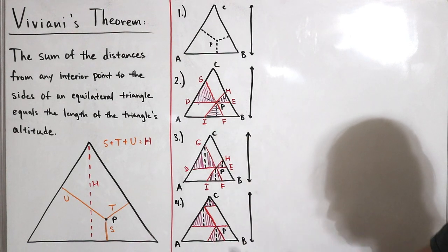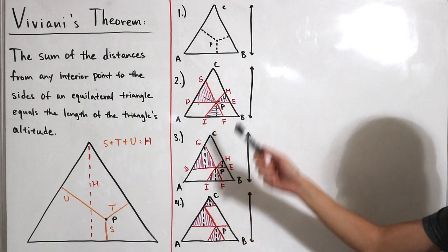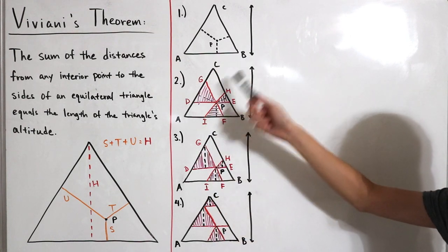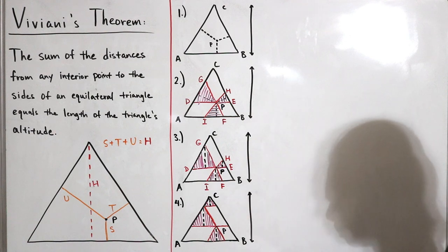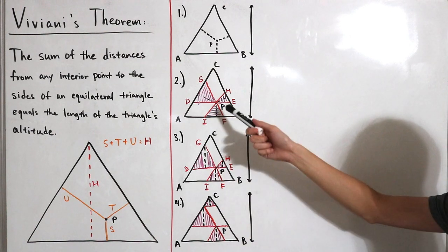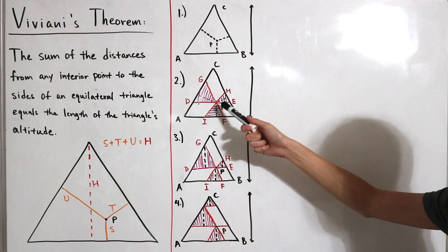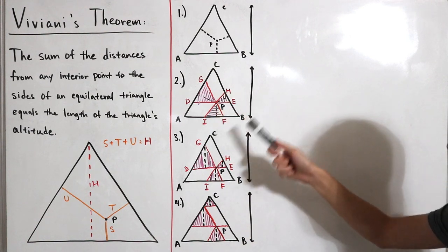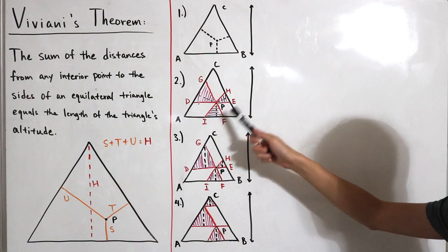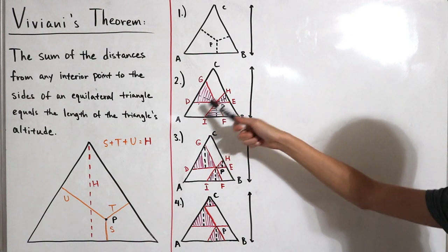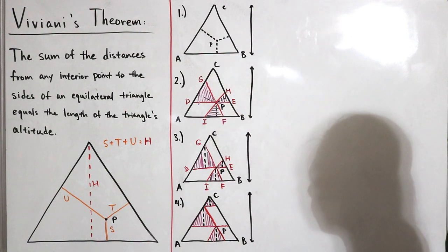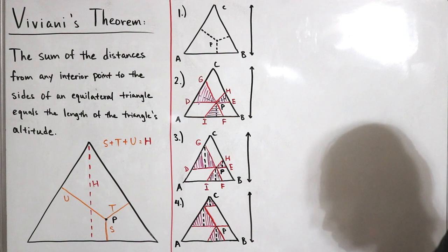Continuing Step 2: GF is parallel to CB, and line segment IH is parallel to AC. Drawing these parallel lines between the segments defines similar triangles — specifically triangle PHE, triangle PFI, and triangle PDG.